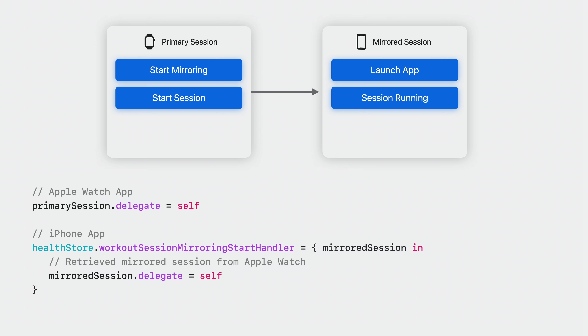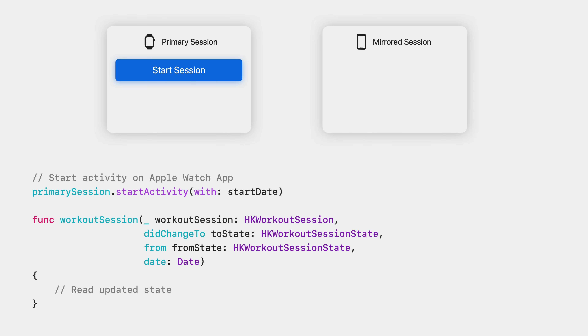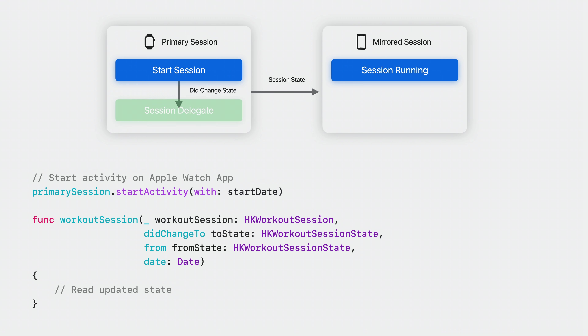Now, I'll start mirroring from my Apple Watch by calling Start Mirroring to Companion Device and start the primary session. Once I call Start Mirroring on Apple Watch, HealthKit launches my companion iPhone app in the background, giving my app 10 seconds to start a live activity and call a handler to start mirroring. The thing that makes this API so convenient is that HealthKit takes care of keeping both the primary and the mirrored session states in sync. For example, when the primary session is paused on my Apple Watch, the mirrored session on my iPhone is paused as well.